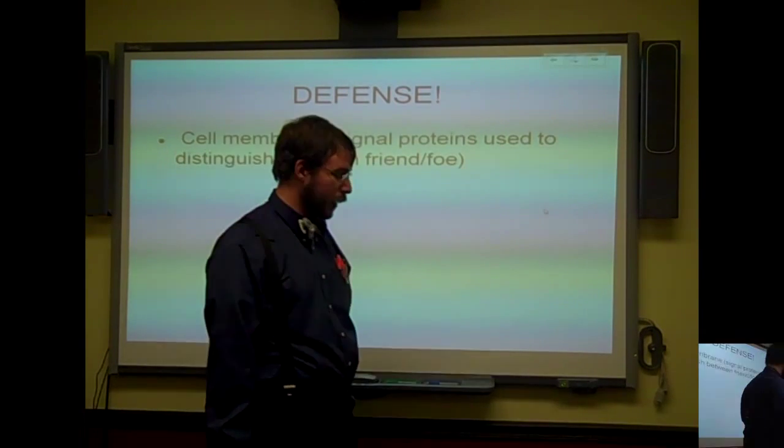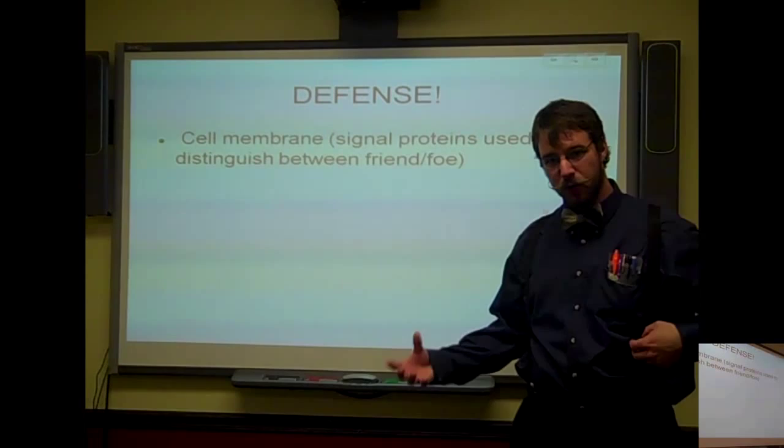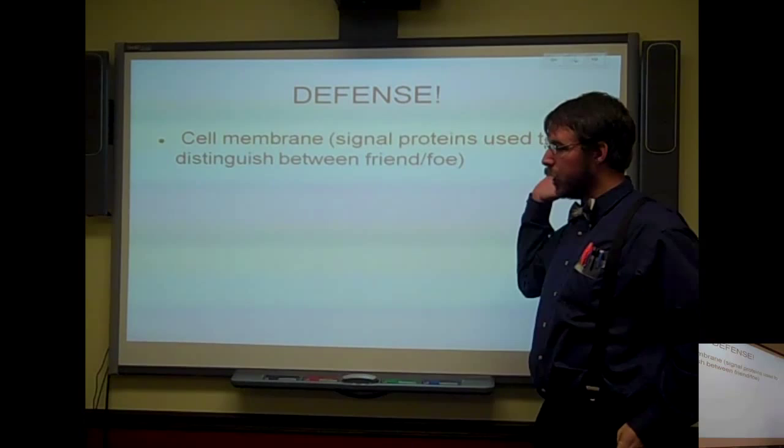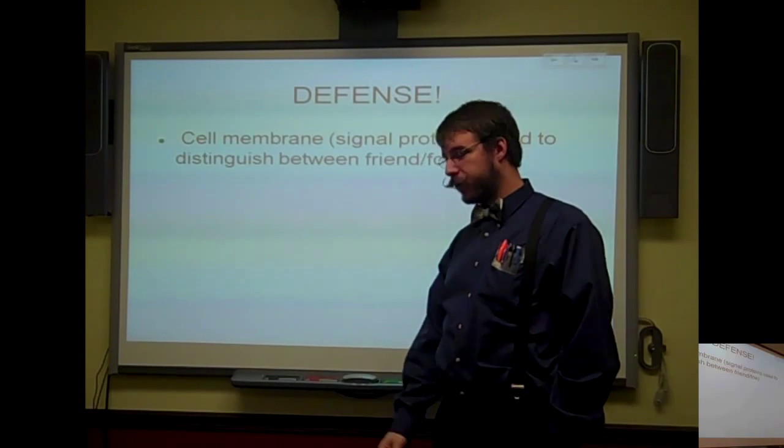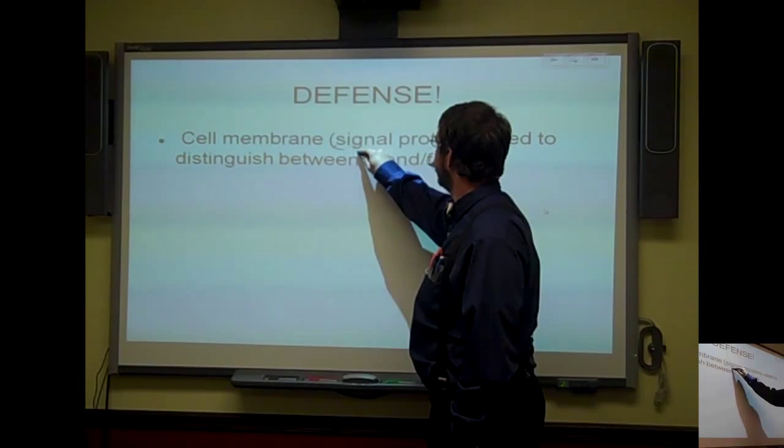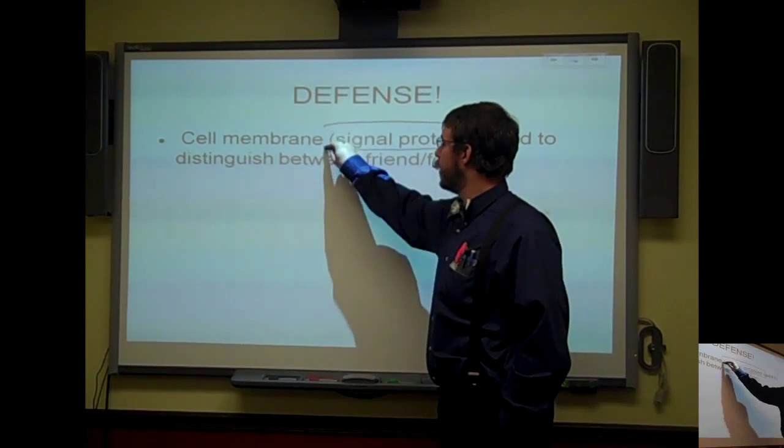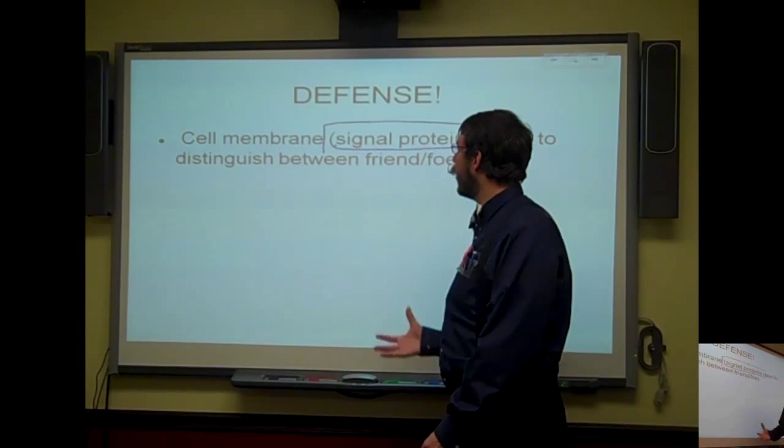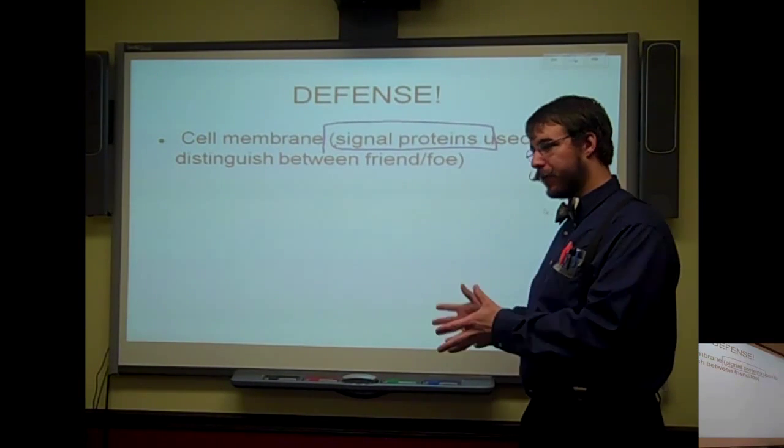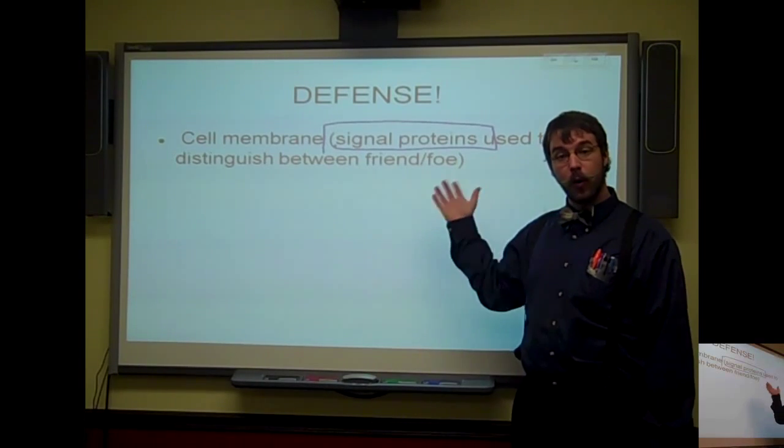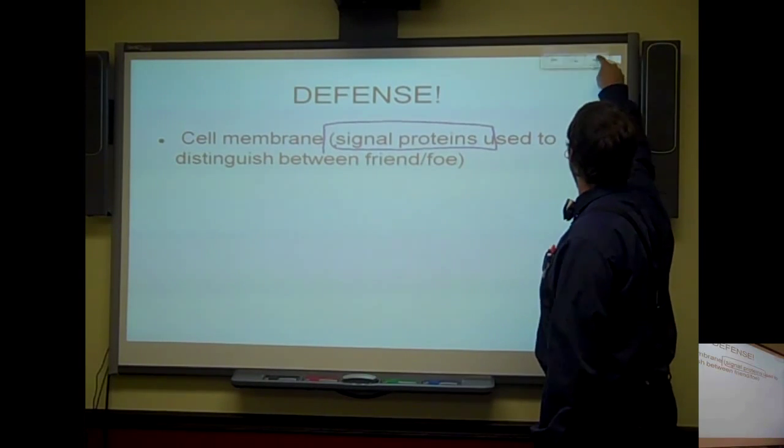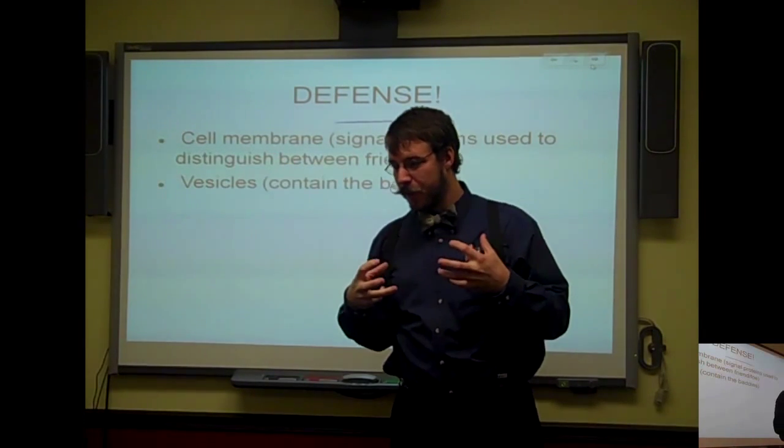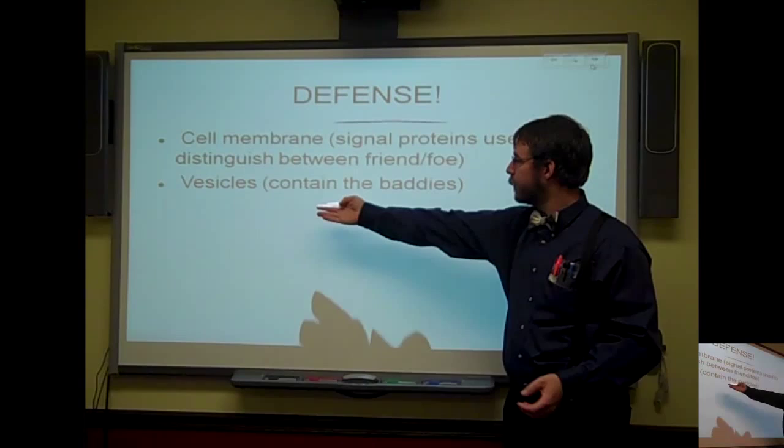Defense is another group of organelles. The cell membrane, huge on defense, controls what goes in and out of the cell. Basically there's all these proteins embedded inside your lipid bilayer that helps distinguish between good cells and bad cells. This is one of the big ways that your white blood cells know who to kill and who to let live. You also have vesicles. When your cells eat the baddies, they put them inside of a vesicle.